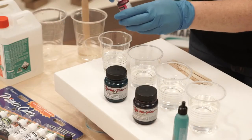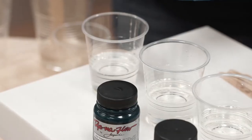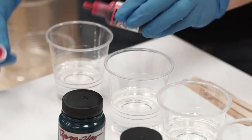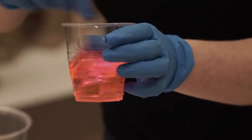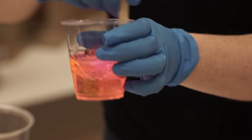We're going to pop each of them into their resin cups. So the Jacquard Pinata color, you need a couple of drops of that, and then give it a very good mix around. Mix the color thoroughly through.